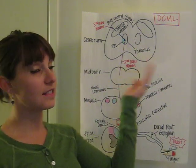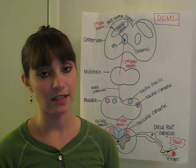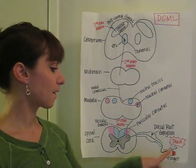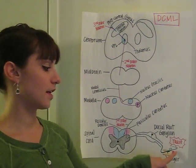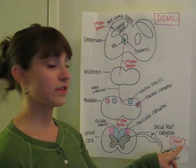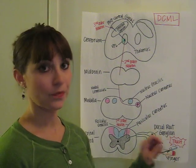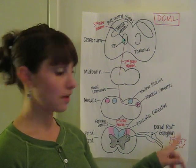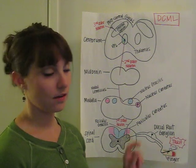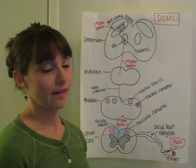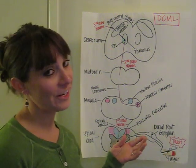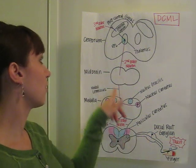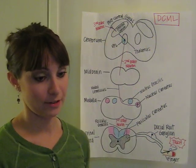This first one is about the DCML tract. To orient you, let me show you that this is a finger, this is the dull end of a safety pin, and it says 'touch.' So we'll be discussing the touch of the dull end of a safety pin on the finger, and the magical journey that it takes sending the information all the way up to the post-central gyrus.